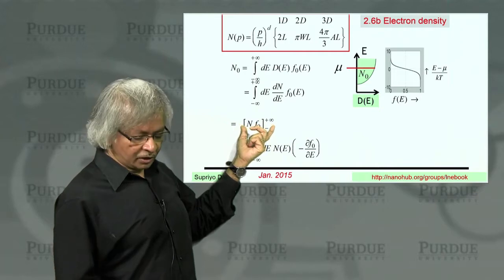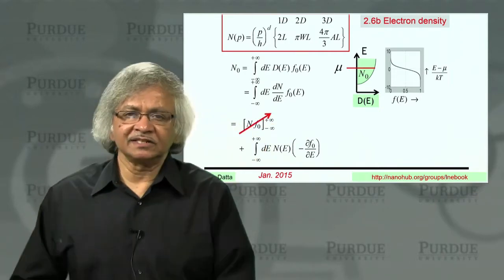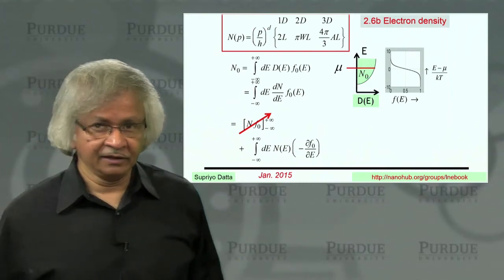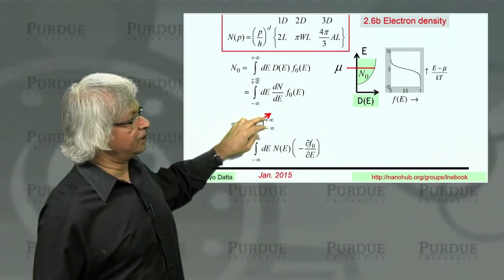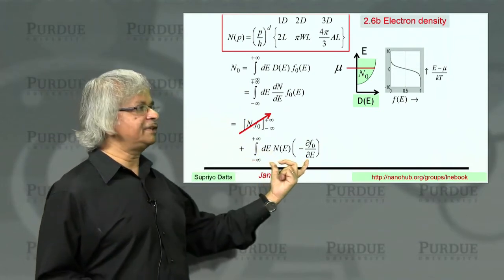So this quantity is zero at both limits. It doesn't matter what it is in between. What is needed here is the value at the two limits, and they are both zero. So you drop it. And so you're left with that.